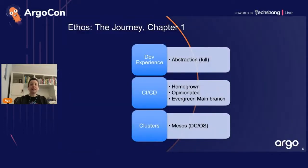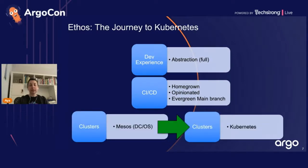Let's talk about the Ethos journey to Kubernetes. Ethos started around 2015, with clusters running Mesos DCOS with homegrown tools. We had a homegrown opinionated CI/CD with guardrails and an abstraction where developers could define service configuration in a technology-agnostic and cloud-agnostic way. In 2020, we moved our entire fleet of clusters from Mesos to Kubernetes. That abstraction and opinionated CI/CD allowed us to perform this migration with minimal disruption, by automating the translation to Kubernetes manifests on a service-by-service, environment-by-environment basis.